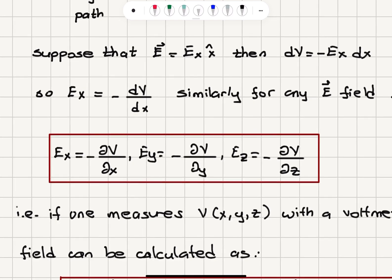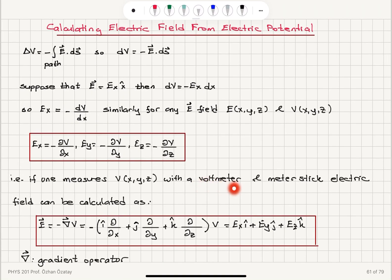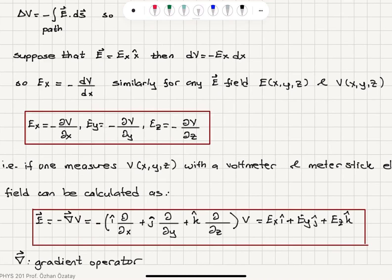What does this tell us? If one measures potential as a function of x, y, and z with a voltmeter and meter stick, so we know how the potential changes with distance from the origin, electric field can be calculated using the gradient operator.